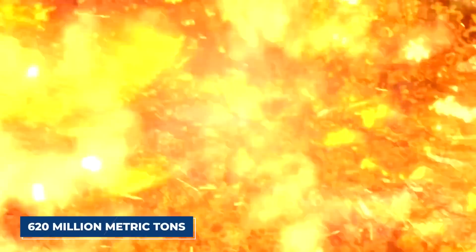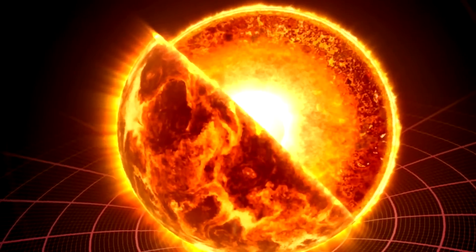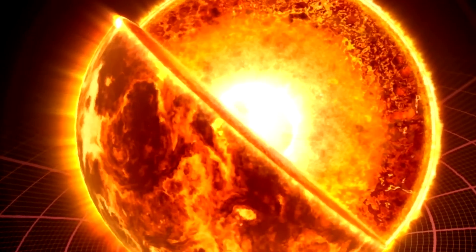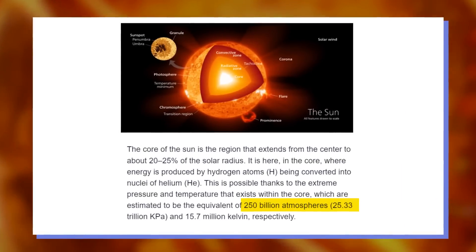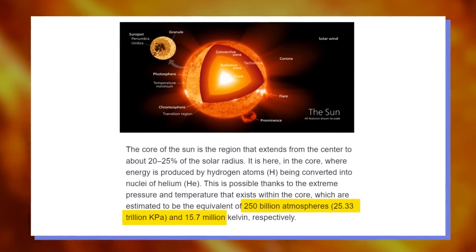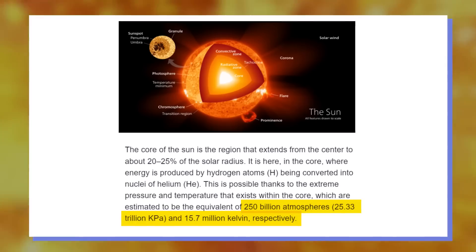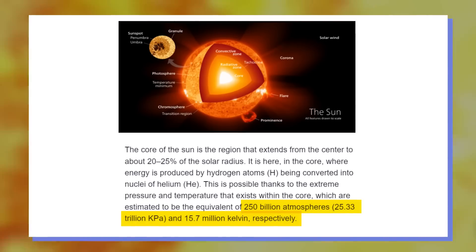Deep within its core, the sun fuses about 620 million metric tons of hydrogen every second. The reaction is possible thanks to the extreme pressure and temperature within the core, estimated to be the equivalent of 250 billion atmospheres or 25.33 trillion kilopascals and 15.7 million kelvin, respectively.